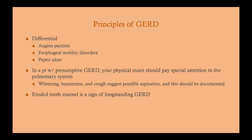In a patient with presumptive reflux disease, the physical exam should pay special attention to the pulmonary system because of aspiration risk, especially if the patient has been vomiting. Look for wheezing, hoarseness, and cough. If aspiration is suspected, document it and get a CBC and chest x-ray. Eroded tooth enamel is a sign of long-standing reflux disease, and those patients should get an EGD — upper endoscopy — to check for metaplastic changes in the esophagus.